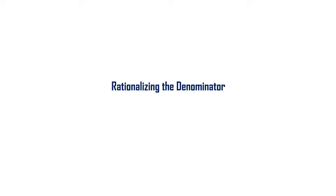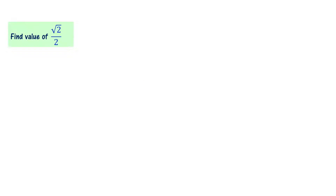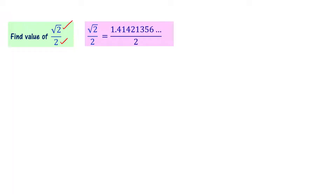Let's now learn about the concept of rationalizing the denominator. Consider this problem: find the value of root 2 divided by 2. Here the numerator has an irrational number and the denominator has a rational number, so it is straightforward. Root 2 by 2 equals 1.41421... divided by 2, which can be solved using the simple long division method.